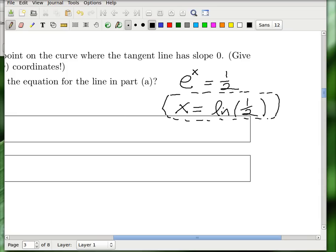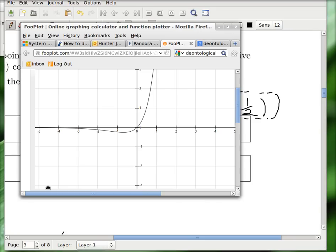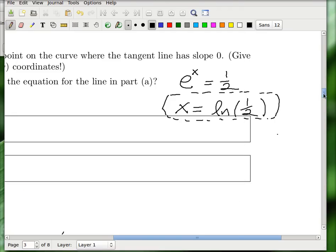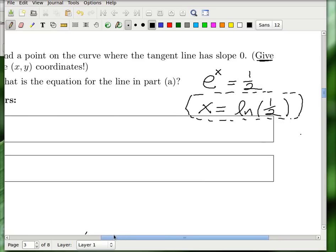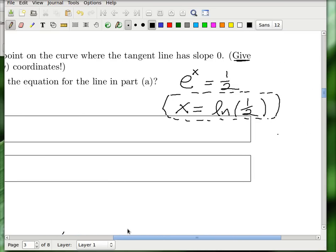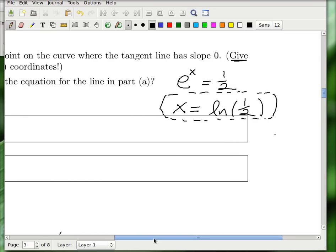So natural log of 1 half, so super fantastic. And so notice this is natural log of 2 to the negative 1, so it actually is something negative. If you put it into your calculator you'll see, it's this negative value right here. So that almost answers the question. The question says give the x and y coordinates, so I just found the x coordinate. How do I find the y coordinate?